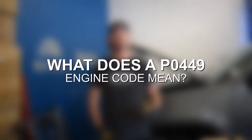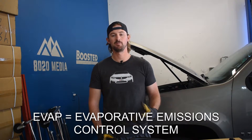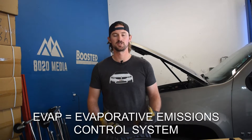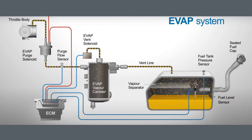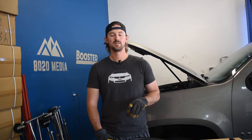The P0449 engine code is related to the EVAP system, which stands for Evaporative Emissions Control System. What the EVAP system does is essentially take fuel vapors that come out of the gas tank and pass those fuel vapors back into the intake tract so they can be burned off instead of being vented to the atmosphere, which is bad for the environment.